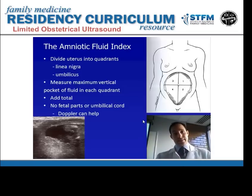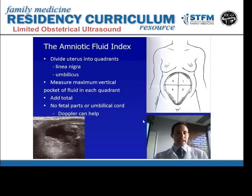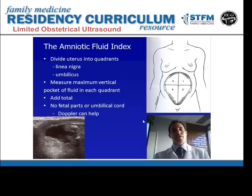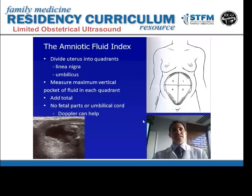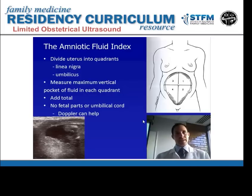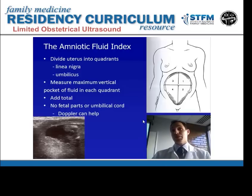For the amniotic fluid index, you mentally divide the uterus into quadrants using the linea nigra in the midline and the umbilicus. You scan through each quadrant with the probe in the sagittal plane, perpendicular to the contour of the uterus, trying to find the maximum vertical pocket of fluid in each quadrant. Fetal parts or umbilical cord cannot be present — it must be just a fluid pocket. You can use Doppler color flow to check for blood flow and confirm there's no umbilical cord present.